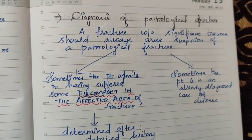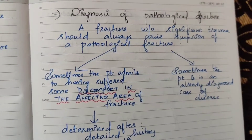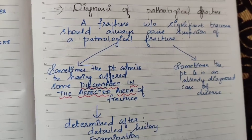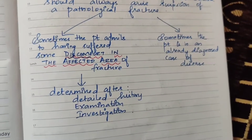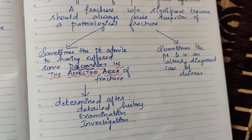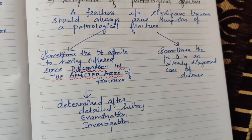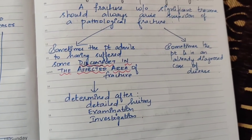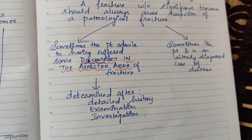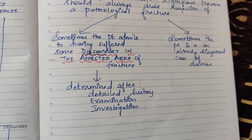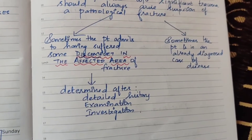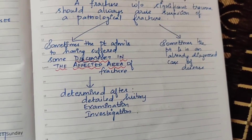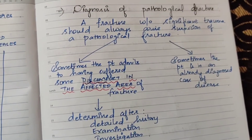Diagnosis of pathological fracture: a fracture without significant trauma should always raise suspicion of a pathological fracture. Sometimes the patient admits to discomfort in the affected area before the fracture. The patient may already have a condition like osteoporosis, rickets, or scurvy but may not know it. Detailed history, examination, and investigations are needed. Sometimes the patient is already diagnosed with a disease condition.